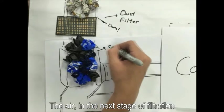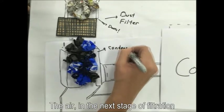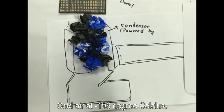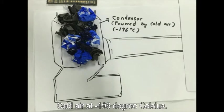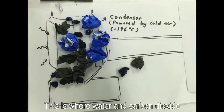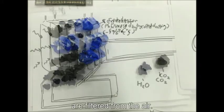The air in the next stage of filtration goes through the condenser, which is powered by cold air at negative 196 degrees Celsius. This is where water and carbon dioxide are filtered from the air. Ice and dry ice will be formed during this process.